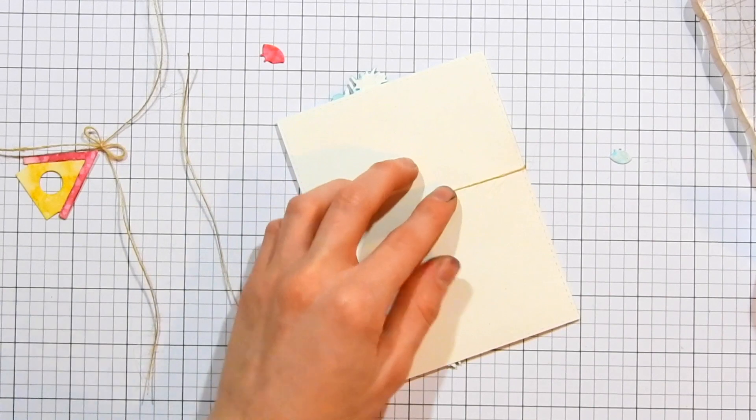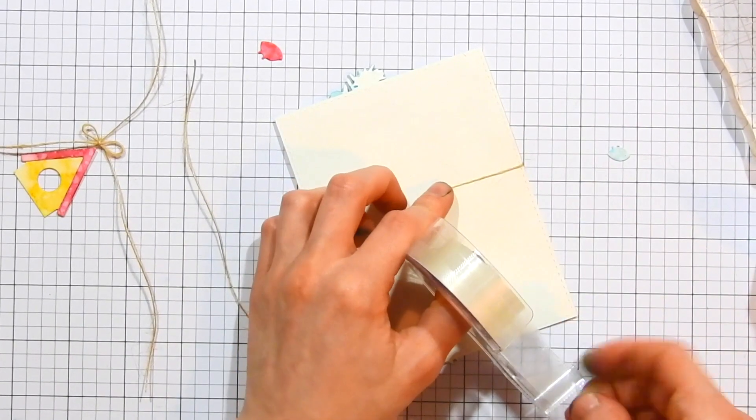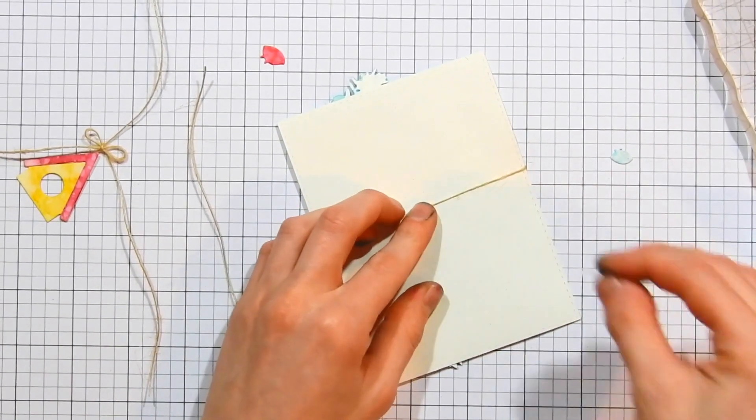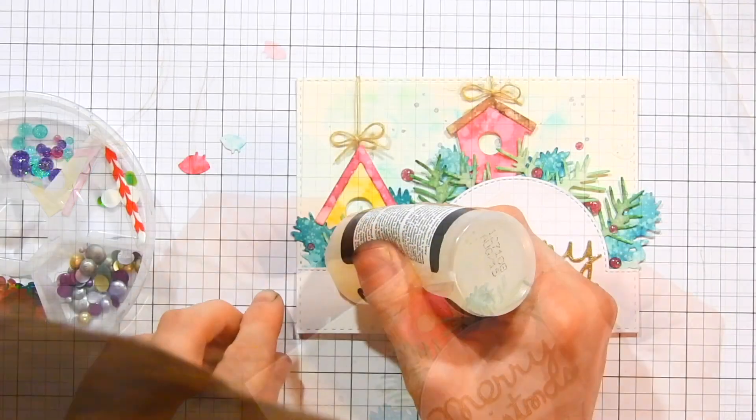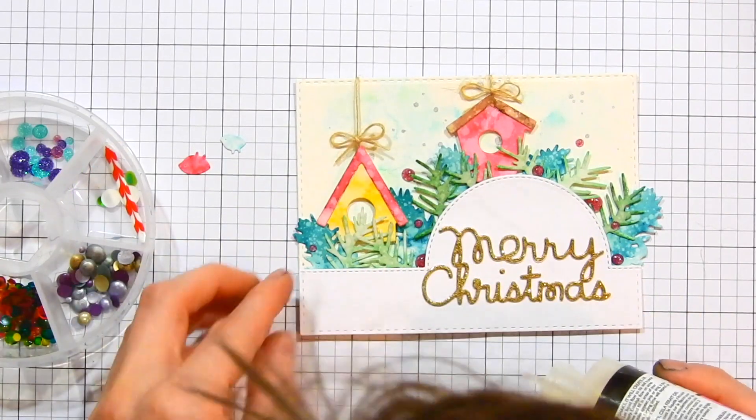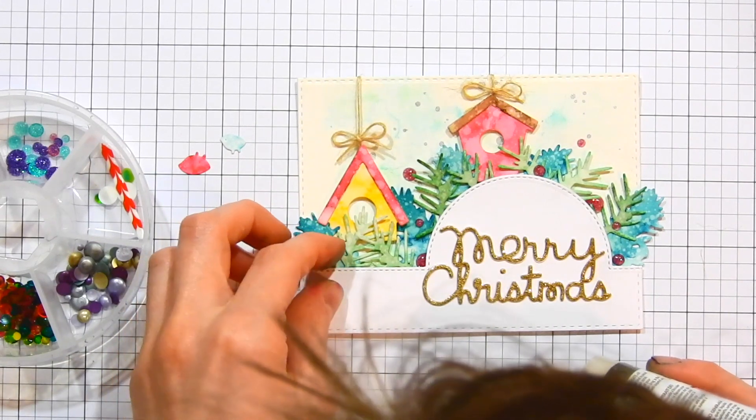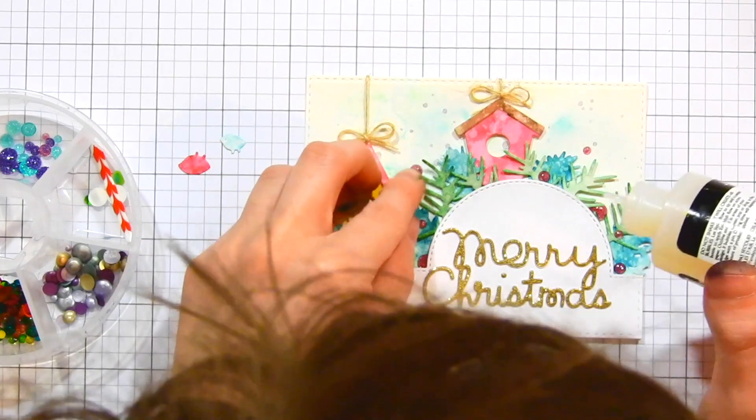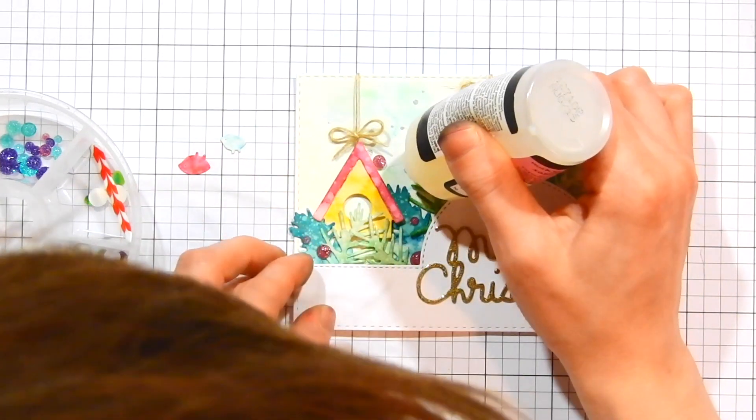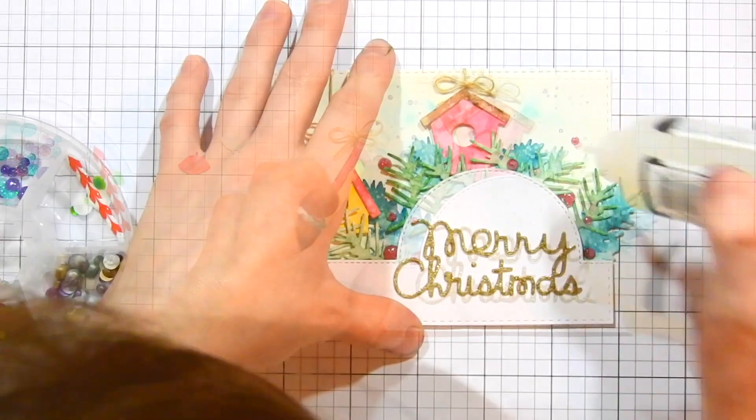I attach them to the backside of my card using some more scotch tape. That's just going to hold them down, and because it's on the backside of the card, you can adhere them down with any type of tape or adhesive that you prefer because nobody's going to see it. Okay, so now it's time to add some embellishing. I'm taking some glitter Nuvo drops that I had already pre-created.